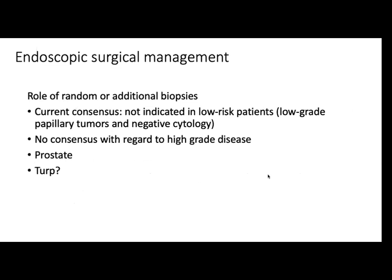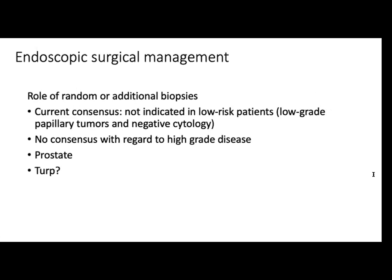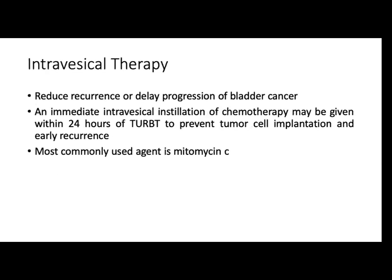Regarding the role of additional biopsies, concurrent biopsy is not indicated in low-risk patients with low-grade papillary tumors and negative cytology. For high-grade, there is no consensus. However, if you're planning to do a neobladder creation, you should anticipate high-grade disease, so you can do a prostate biopsy. If a bladder mass is found in a patient scheduled for TURP, you could do both TURP and TURBT simultaneously for a low-grade tumor. However, for high-grade, go for the bladder first to avoid tumor seeding.